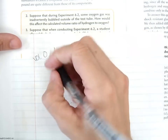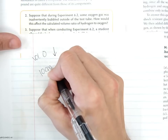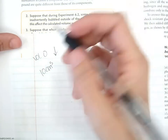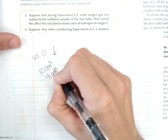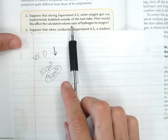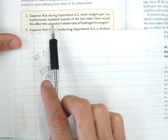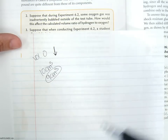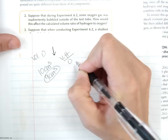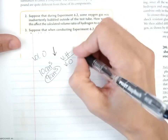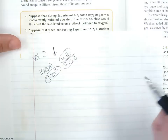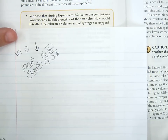For example, if I was supposed to collect 10 cubic centimeters of oxygen but some of it bubbled outside of the test tube, perhaps I only had 9 cubic centimeters instead — the number is lower than what it should be. Now, the question asks how this affects the calculated volume ratio of hydrogen to oxygen. The volume ratio is basically volume of hydrogen divided by volume of oxygen. If the hydrogen number is exactly what it should be but the oxygen number is less than it should be, how is it affected?